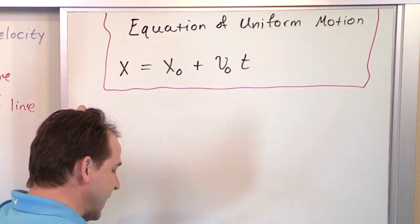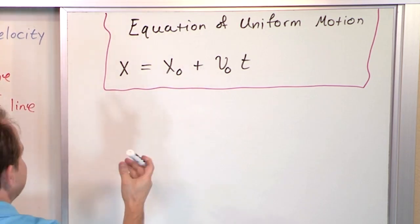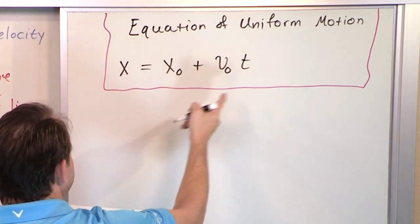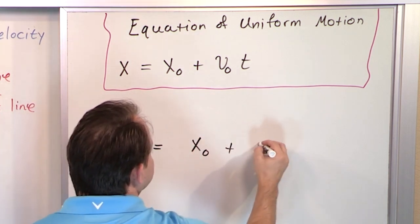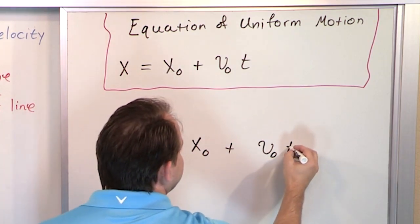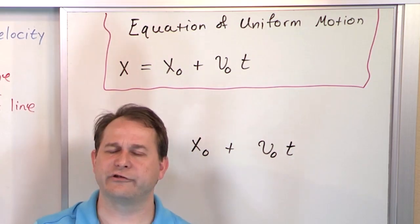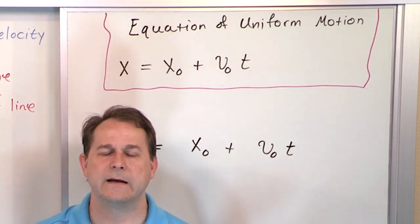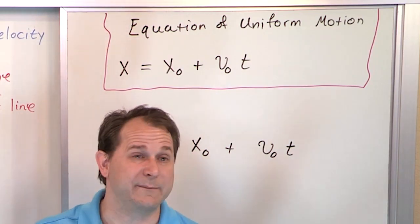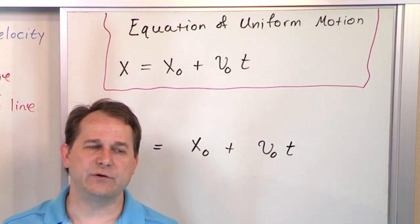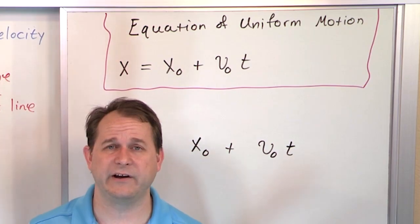I'm going to write the equation again below because I'm going to mark all over it, but I want to leave the original alone. So: x equals x naught plus v naught t. There's one thing I want to impress on you at the beginning of physics that will serve you all the way through your class.